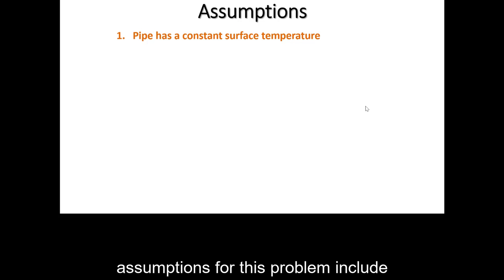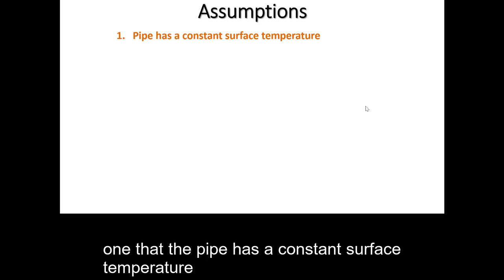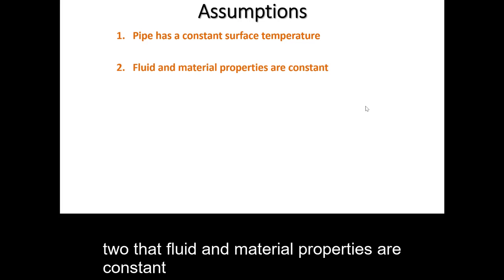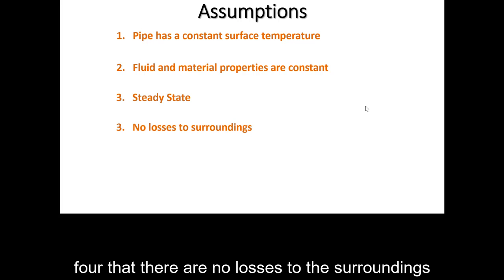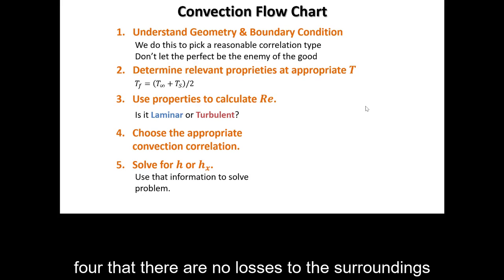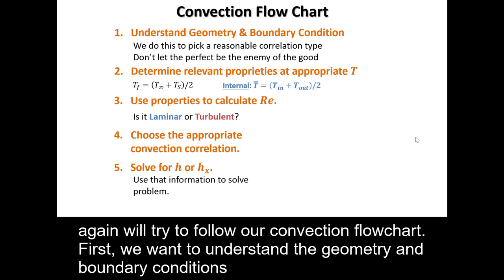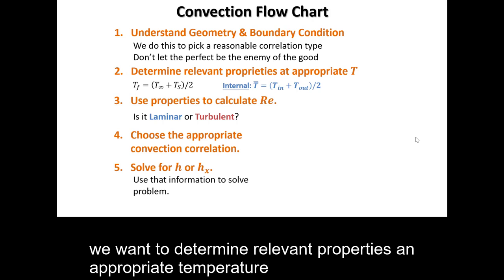Assumptions for this problem include: 1, that the pipe has a constant surface temperature; 2, that fluid and material properties are constant; 3, that the system is at steady state; 4, that there are no losses to the surroundings. Again, we'll try to follow our convection flowchart. First, we want to understand the geometry and boundary conditions. We want to determine relevant properties at an appropriate temperature.